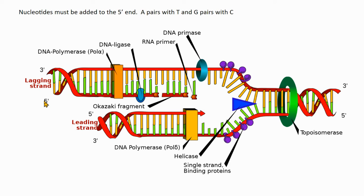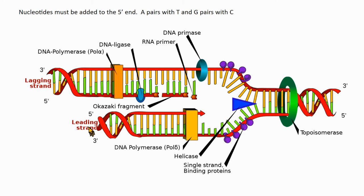You can only add nucleotides to the five prime end, so one strand is considered the leading strand. As the helicase unravels the DNA, you can keep adding complementary base pairs continuously. This is the leading strand because it is very straightforward. DNA polymerase is the protein that actually adds the complementary nucleotides — the new nucleotides — to the leading strand.